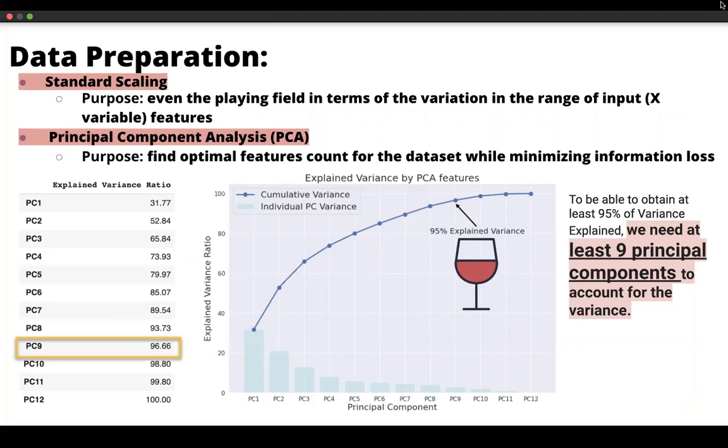Next, we prepared our data before we do any further model. The first thing that we need to do was that Jamie was also talking about the variation in the value of each features in the data set, which is why we did the scaling first. We do the standardization scaling for the features so that they perform in standard distribution with general variation. And next, we do the principal components analysis. The purpose was that we could find the optimal features count for the data set while minimizing information loss. And what we found was that to be able to obtain at least 95% of the variance explained, we need at least nine principal components to account for the variance. So nine features.